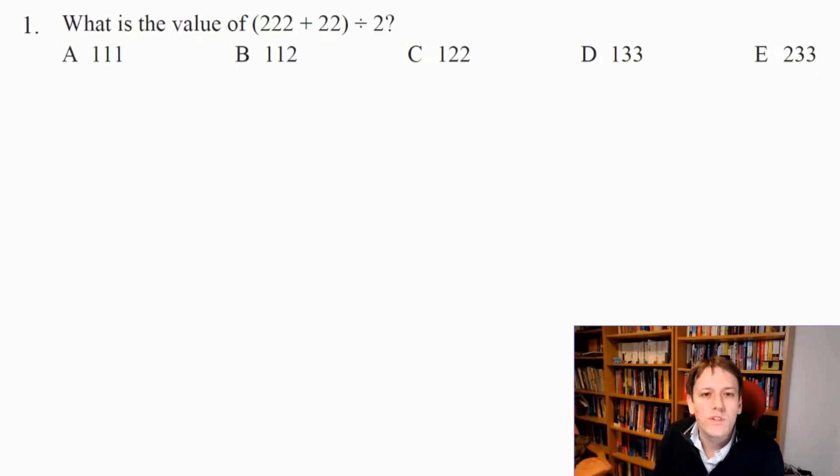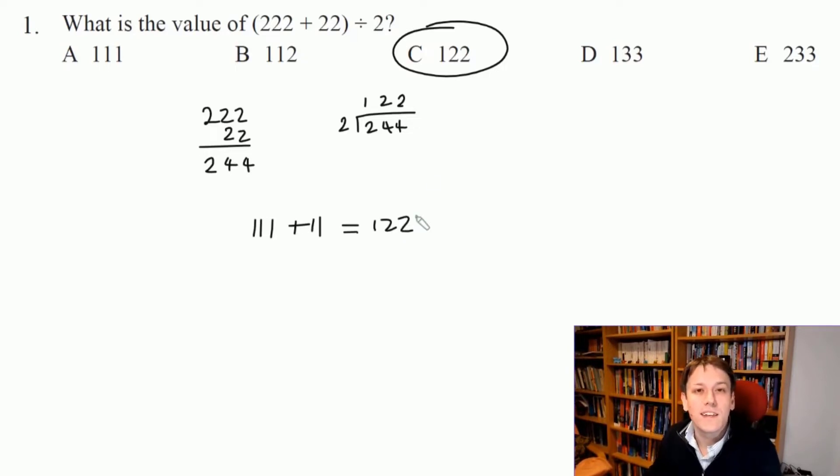In question one we want to start by adding 222 to 22, so that's nice and easy. We get 244 and then we can divide that by 2. You can probably do this in your head as well. We just get 122 and so the answer is C. For a super efficient method you might notice that you could divide them each by 2 and add them together, so the answer is just 111 plus 11 and get to 122 really quickly like that.